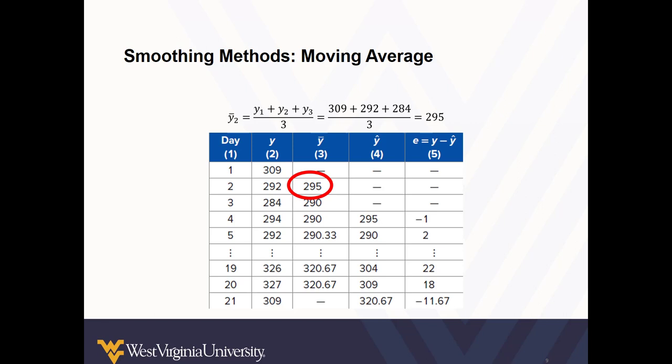In the next row, the sum of the number of calls from days two, three, and four, divided by three, for an average of 290. So comparing columns two and three, the specific values differ. Let's see what that looks like.